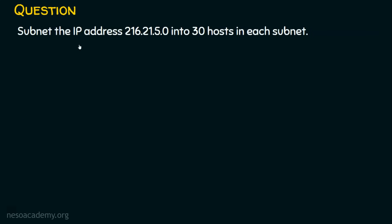The question is: subnet the IP address 216.21.5.0 into 30 hosts in each subnet. We are given a class C IP address and required to subnet it into 30 hosts per subnet. In a class C, there are 256 IP addresses — the first is the network address and the last is the broadcast address — giving 254 usable IPs. Since our requirement is just 30, using the traditional classful world wastes IP addresses. That's why we use classless addressing, which is possible with subnetting.